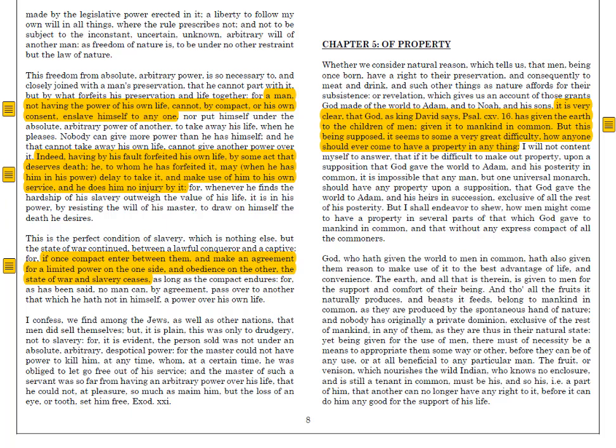For Locke, the key conceptual element when we talk about property is the capacity of any one individual to claim some portion of nature to the exclusion of the rest, of the commons. This is a fundamental problem for Locke, because he takes it as affirmed by Scripture that all men have an equal claim to the bounty that God has provided. If we all have an equal claim, if we are all equally the children of God, and God has given us the world for our sustenance, how is it that any one of us can look at some piece of nature and say to the rest: you may not have this, this is mine?